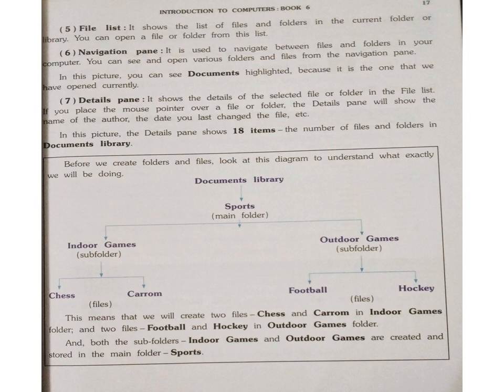The next one is the Navigation Pane. It is used to navigate between files and folders in your computer — you can see and open various folders and files from the navigation pane. For example, if you are in the Documents library and you want to open the Music library, you can easily do so from here. In this picture, Documents is highlighted because it is the one we have currently opened. If you open the Music library, then the Music folder will be highlighted.